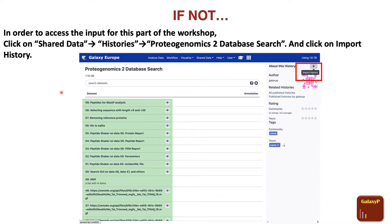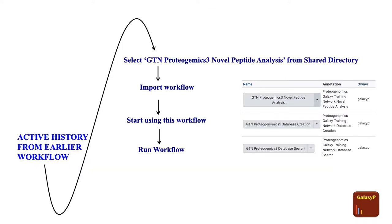Now this history will become your active history. Once you have imported the history, the next part is to obtain the workflow. To make your life easier, we have published this workflow. Go to shared data and select workflows. Search for the GTN Proteogenomics 3 novel peptide analysis by the owner Galaxy P. Import this workflow, and when you import it, select 'start using this workflow.' Now you're ready to run your workflow.